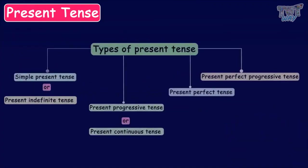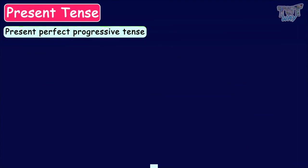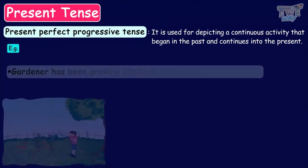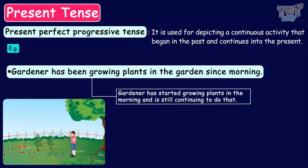Now let's learn about the present perfect progressive tense. Present perfect progressive tense is used for depicting a continuous activity that began in the past and continues into the present. For example, 'Gardener has been growing plants in the garden since morning.' Here, the gardener started growing plants in the morning and is still continuing — the action is still in progress.